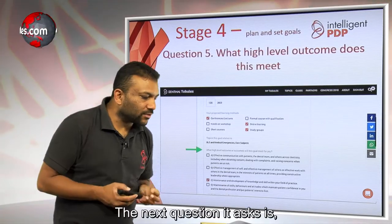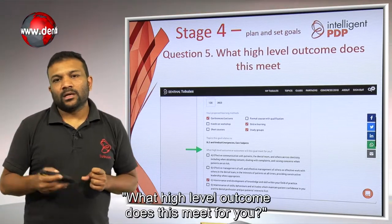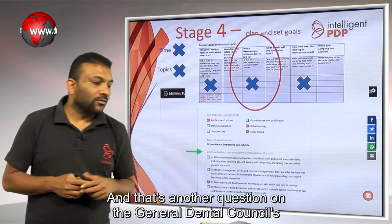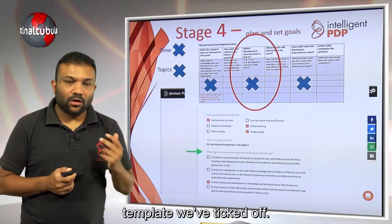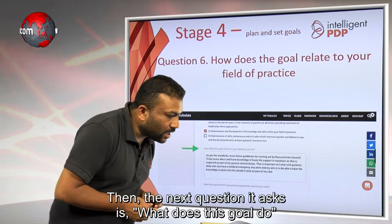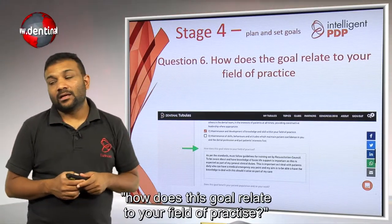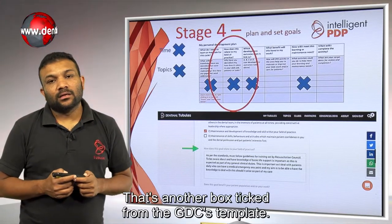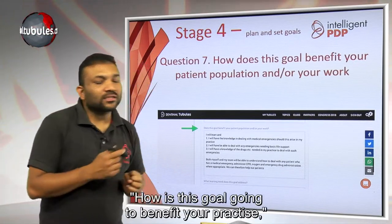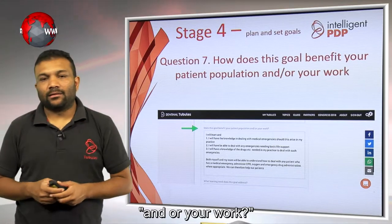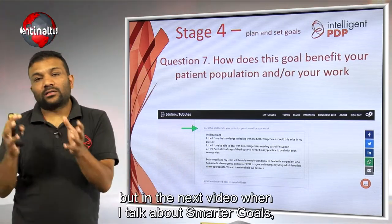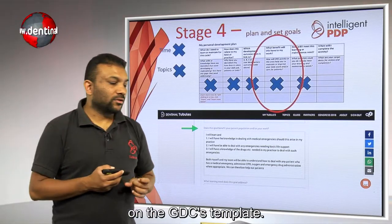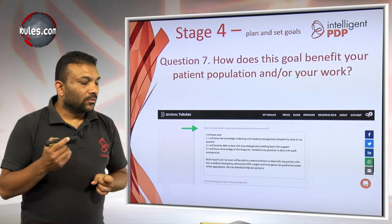Let's finish that goal. The next question asks what high-level outcome this meets. In the first video of the Enhanced CPD series, I told you about the four high-level outcomes — click Outcome C. That's another question on the GDC template ticked off. Then the next question asks how this goal relates to your field of practice — I've written something down there which you can copy and paste. That's another box ticked. Then there's the question of how this goal is going to benefit your practice and your work.